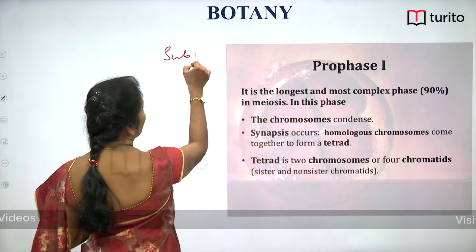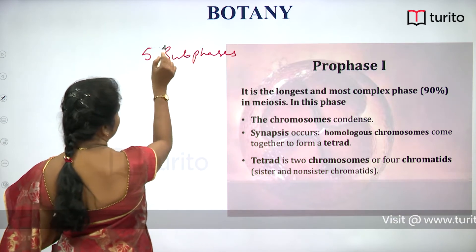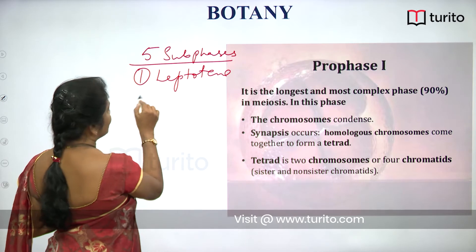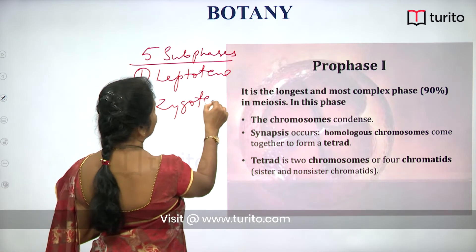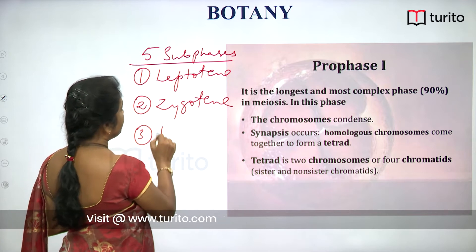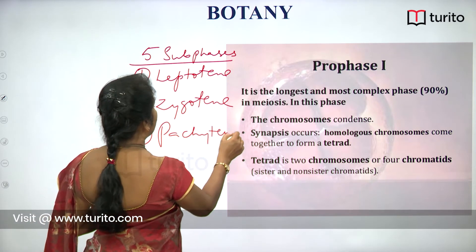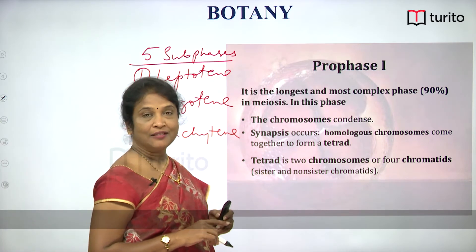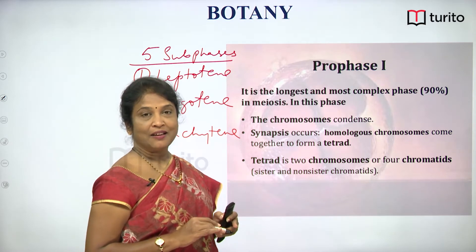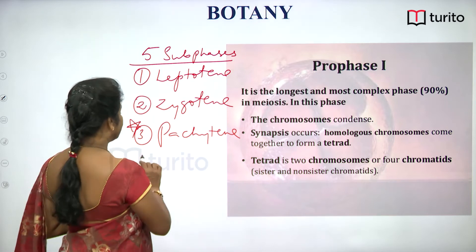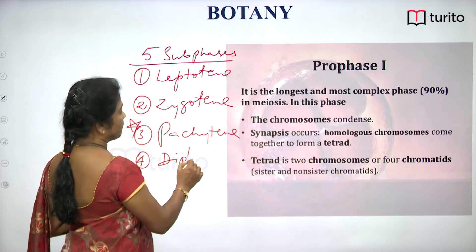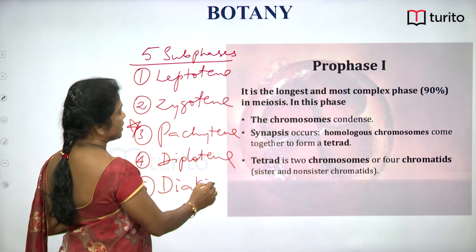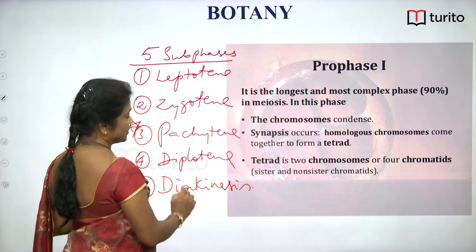How many sub-phases are there? Five different sub-phases: leptotene, zygotene, and then pachytene — place a star mark for pachytene, as it is a very important sub-phase of prophase one with evolutionary significance, quite interesting, and we will discuss it later. The next one is diplotene, and then diakinesis. So prophase one ends with diakinesis.